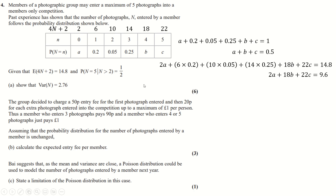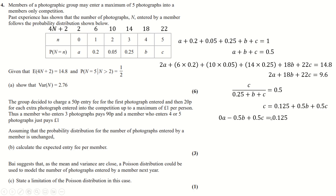The third equation comes from the conditional probability: P(N=5 | N>2) = 1/2. The probabilities for N > 2 form the denominator, and P(N=5) = c is the numerator. Cross-multiplying and rearranging gives the third equation. Inputting all three simultaneous equations into the calculator solver gives the values of a, b, and c.